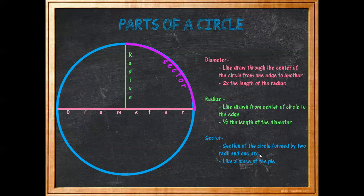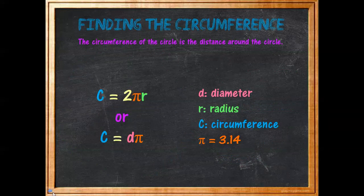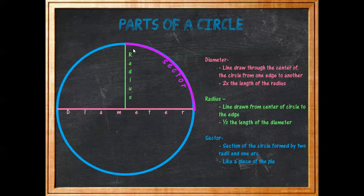A sector is a section of the circle formed by two radii — radii is just the plural for radius — and one arc. The arc is the outer edge of the circle that connects two points. So a sector is like a piece of a pie: here are the two radii, here's the arc, and this purple section would be the sector.